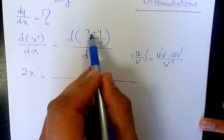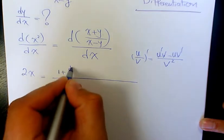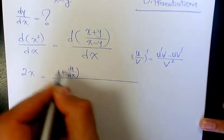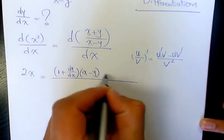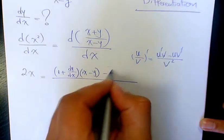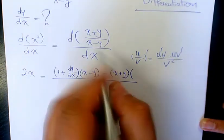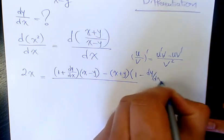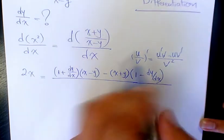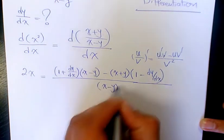u prime is gonna be the derivative of the numerator which is gonna be 1 plus dy over dx times v which is x minus y minus u which is x plus y times derivative of v which is gonna be 1 minus dy over dx. Over v squared, x minus y to the power of 2.